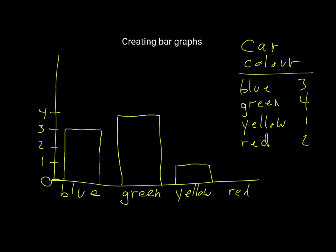Bring that down. Then red had two — that comes down there. The next step is to double-check our bars. This one looks good, this one looks good, that one looks okay, and that one looks okay.